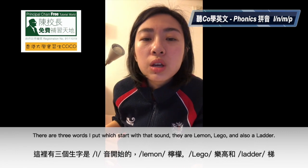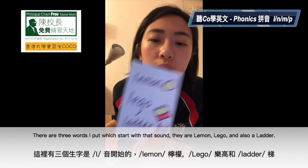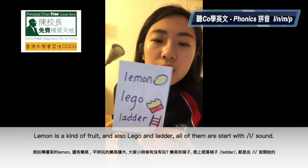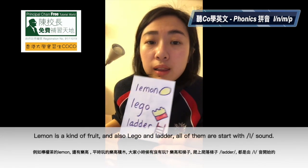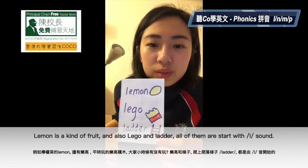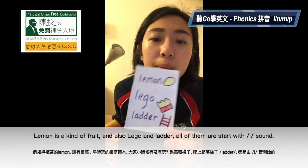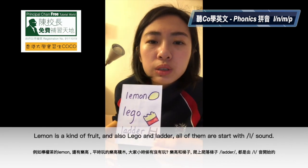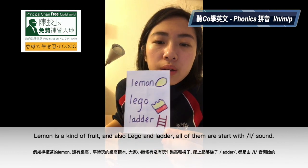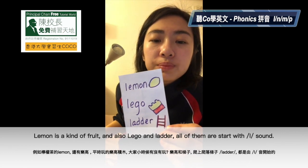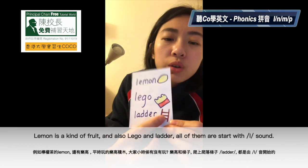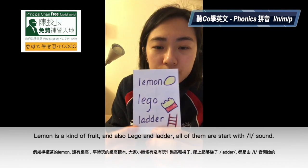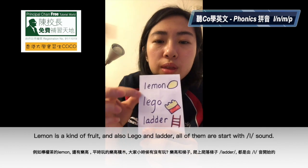And there are 3 words that I put which start with this sound. They are lemon, lego, and also ladder. Lemon is a kind of fruit — 食檸檬啊,或者檸檬茶那些, lemon. And also lego, 平時玩的樂高, lego. And ladder — 爬上爬落那些梯, it's a ladder. They all start with this L sound.